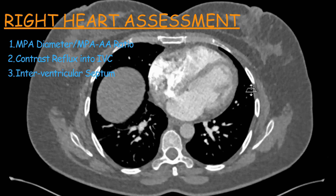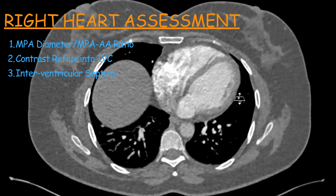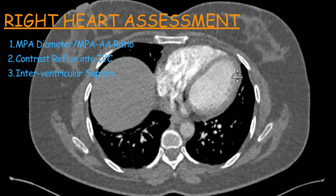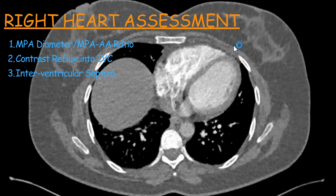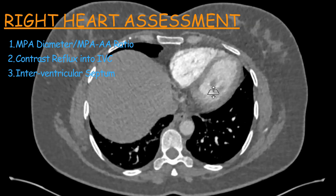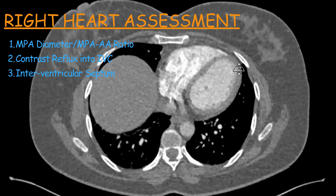The third sign is looking at the intraventricular septum. Here you can see the intraventricular septum is quite smooth. If you look carefully, obviously this is the right ventricle and this is the left ventricle — the septum is slightly bowing towards the right ventricle, which is its normal position. If right ventricular pressure increases, the intraventricular septum can become flat or eventually start bowing towards the left ventricle. These signs are important to assess increasing right ventricular pressure.